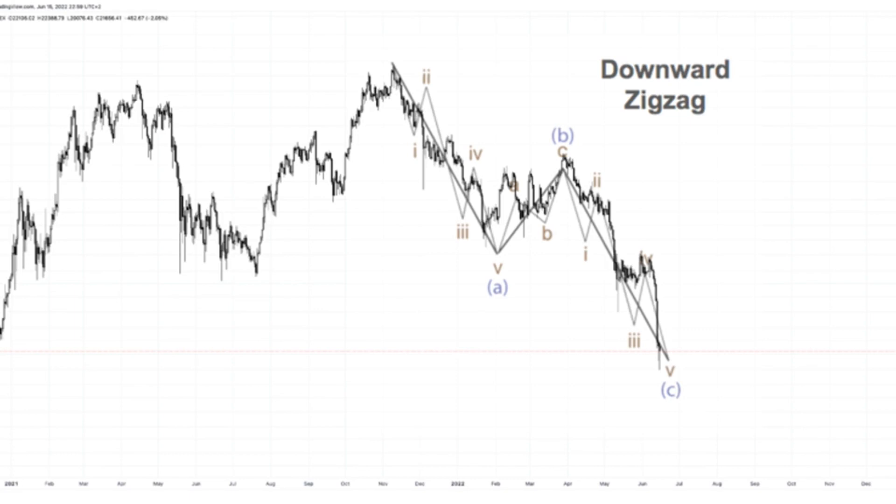More simply put, bull and bear phases alternate in a predictable manner through what Elliott referred to as waves. The theory outlines that markets move up between a motive phase and corrective phase.